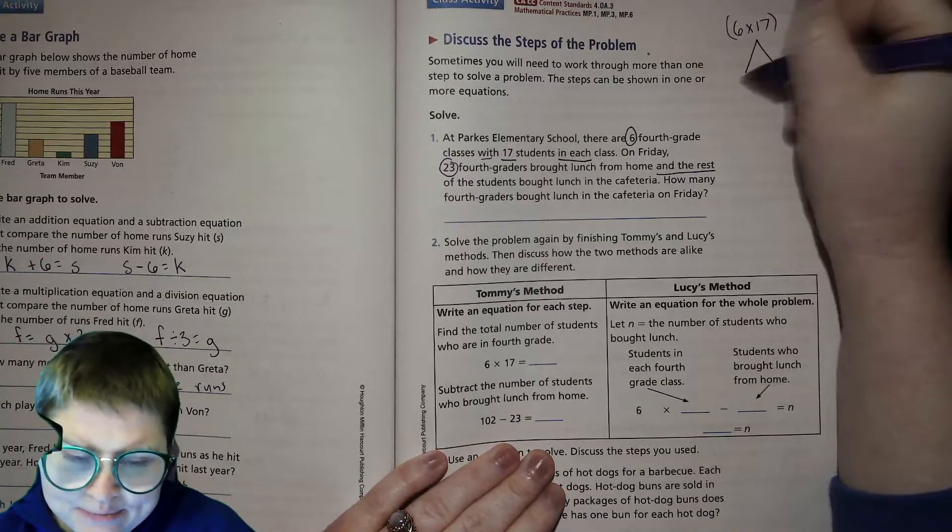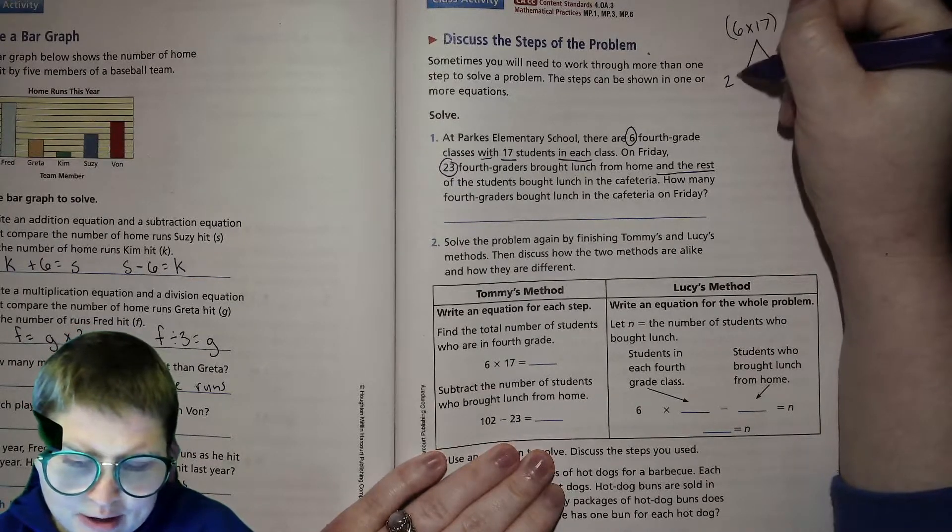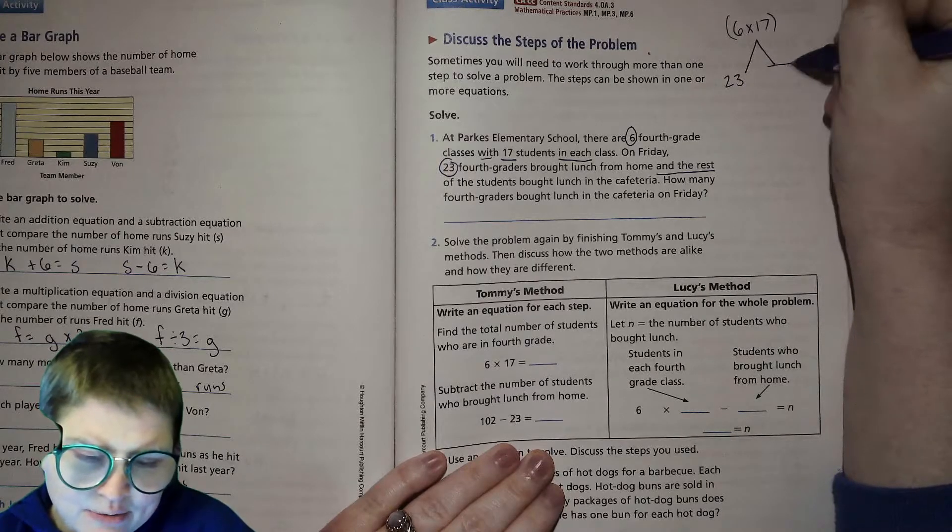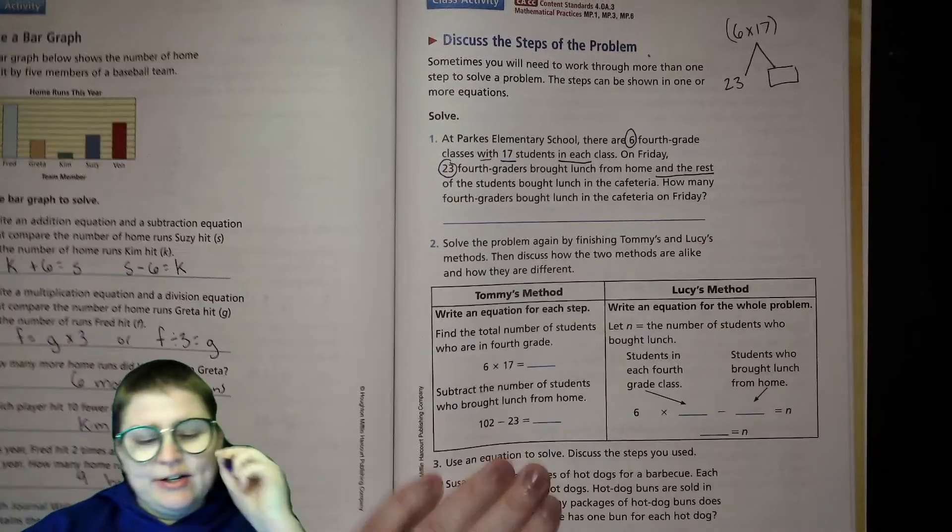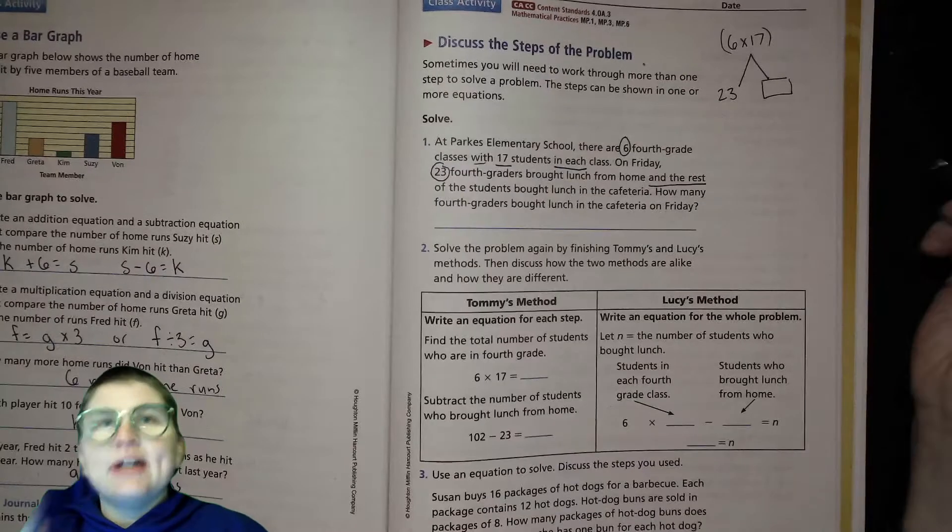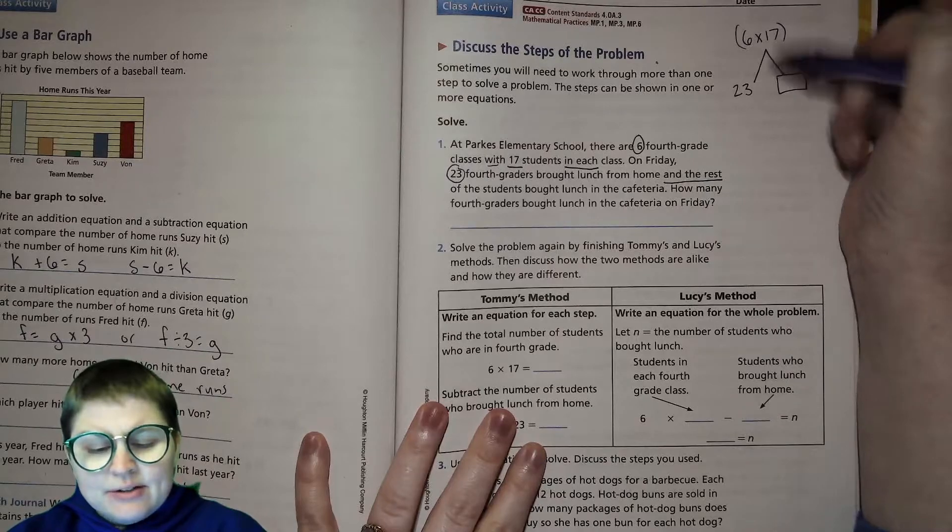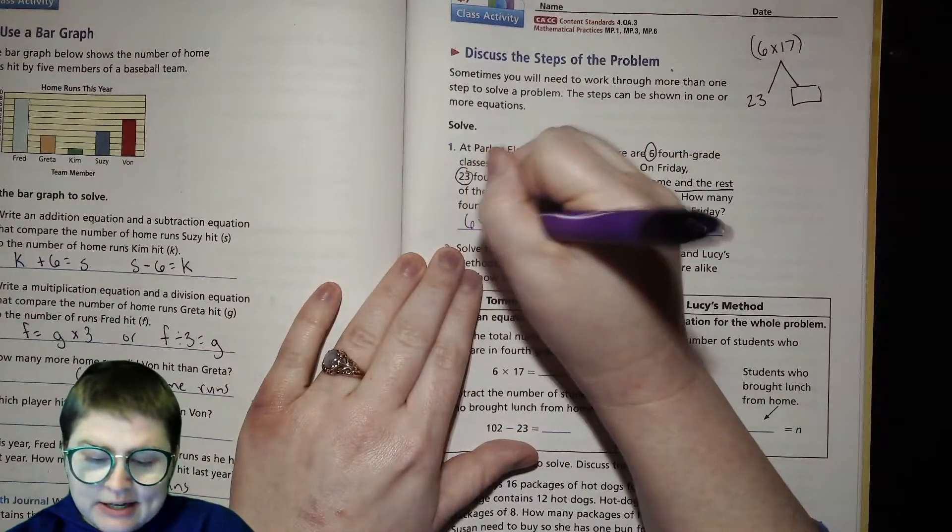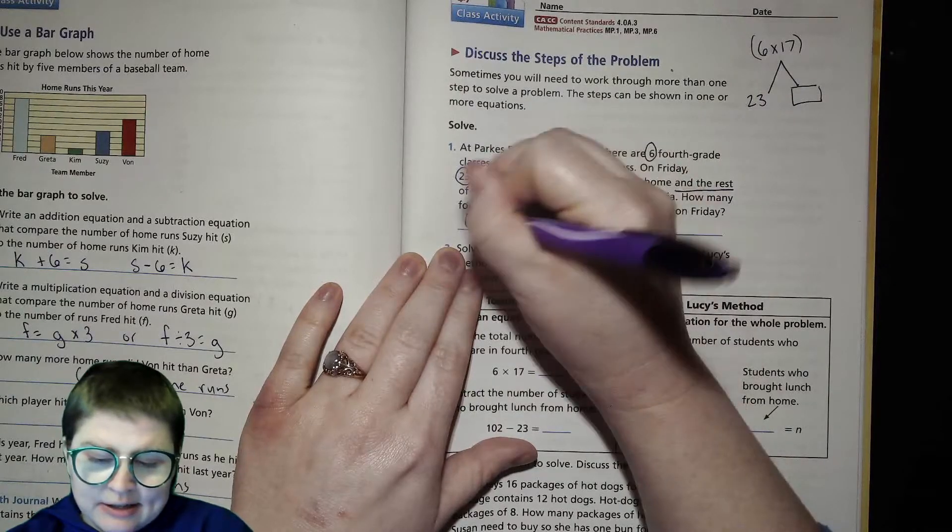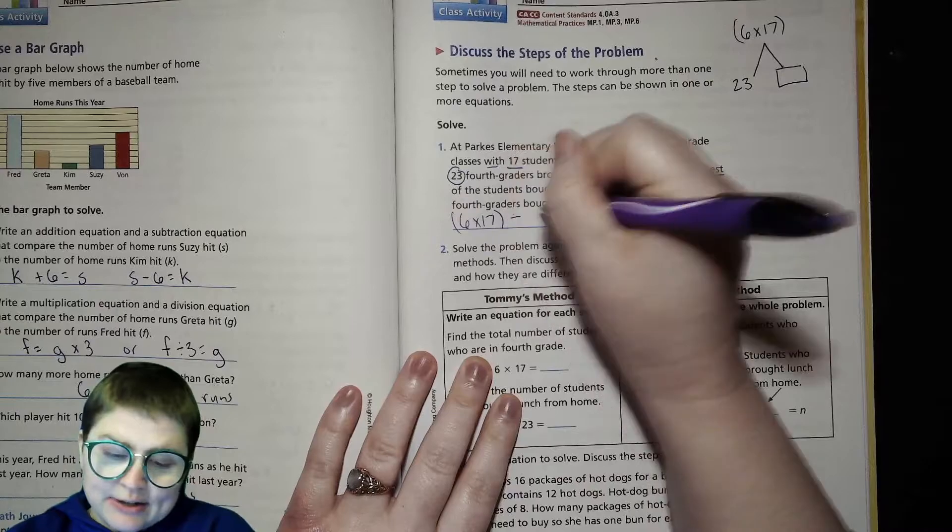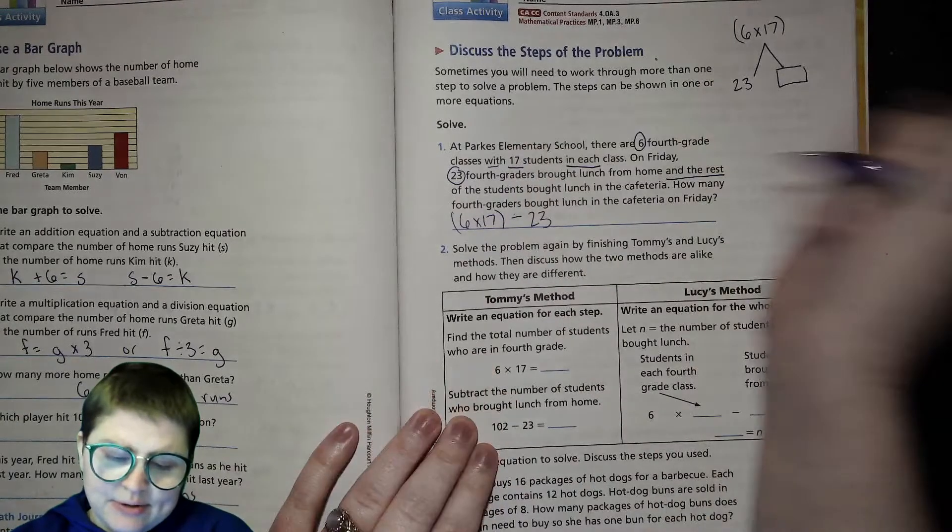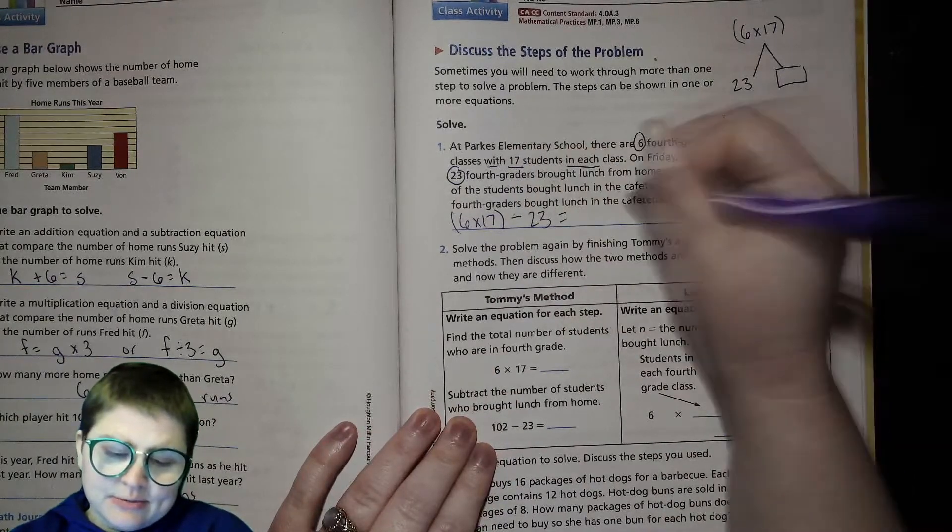Some of them brought lunch from home, the rest bought lunch from the cafeteria. This is what we're looking for. So what operations do we do to find that number? Well, to find this missing partner, we can subtract. So we'll write down the equation 6 times 17 in parentheses to show we need to do that first to find the total, and then subtract 23 equals whatever the number is.